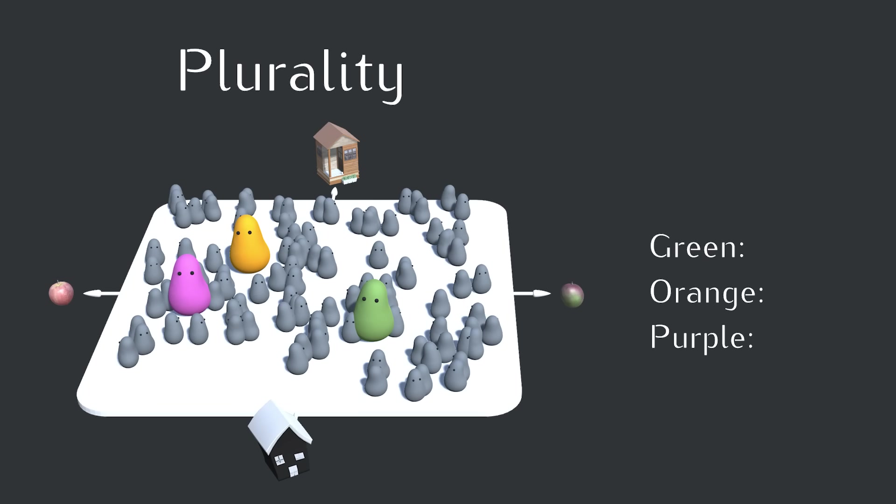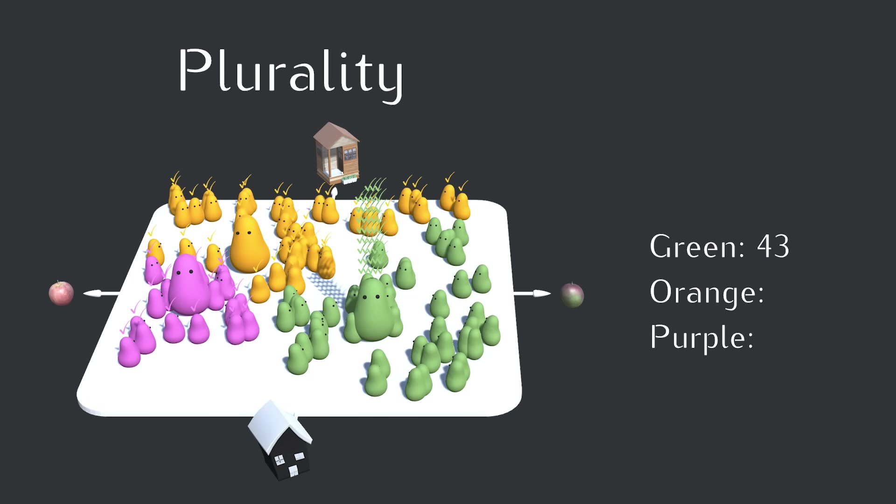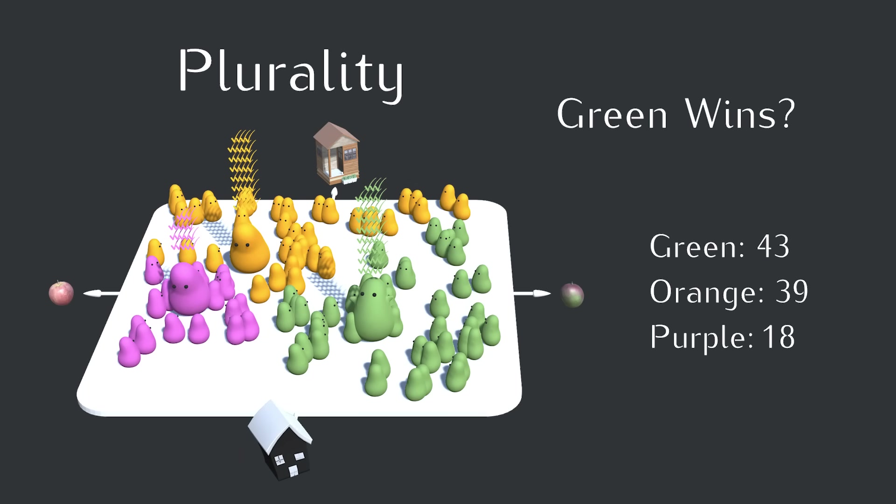But now let's add a third purple candidate. What do you think will happen in this case? Well, let's see. With purple in the mix, green ends up winning instead of orange. If you live in a place with a two-party system, you probably saw that coming. This result is a bit weird. Purple joined the race just to get last place, but they still changed the winner. Orange voters are going to be mad about that, and even most purple voters would have preferred orange over green. This is called the spoiler effect.